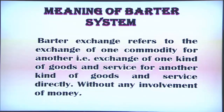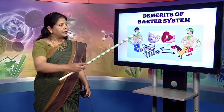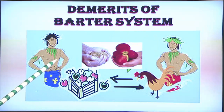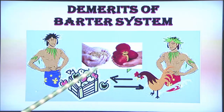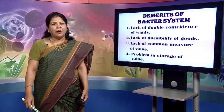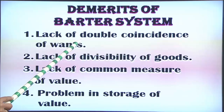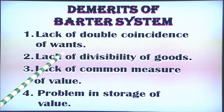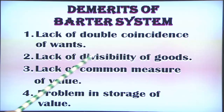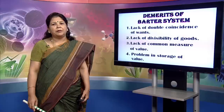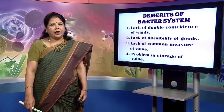The barter system involved exchanges directly without any involvement of money — say apples exchanged for wheat, fruit for other objects, or for a hen. However, the barter system faced several problems: the double coincidence of wants was not there, there was lack of divisibility of goods, lack of a common measure of value, and a problem in storage of value.